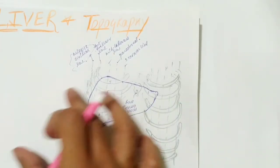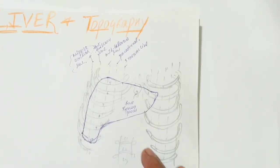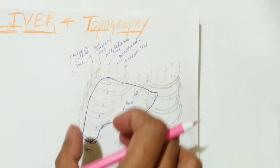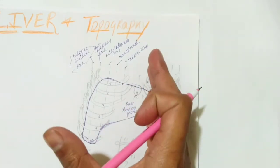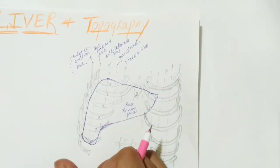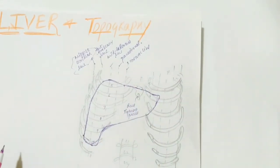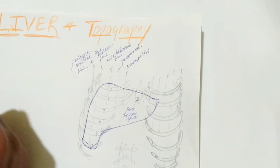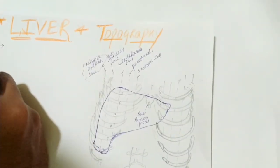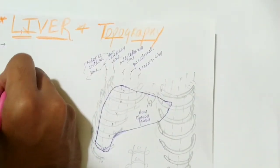So this was your skeletotopy. The skeletotopy has two boundaries — the upper boundary and the lower boundary, each defined with respect to your skeleton. Now let's move on to syntopy of the liver.